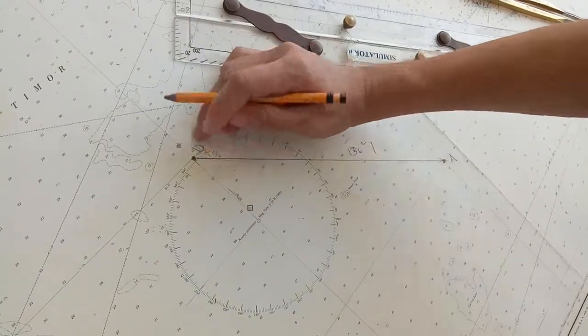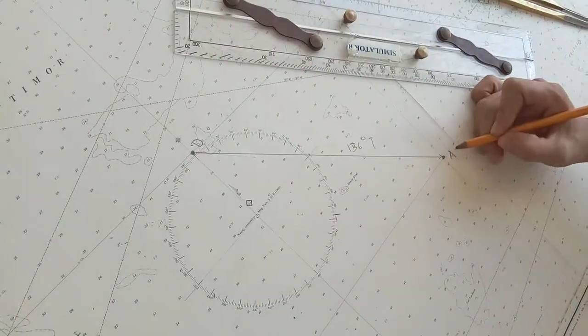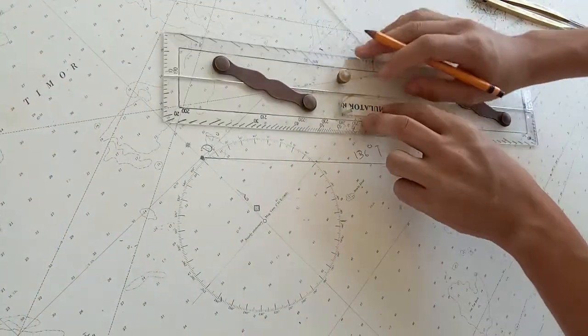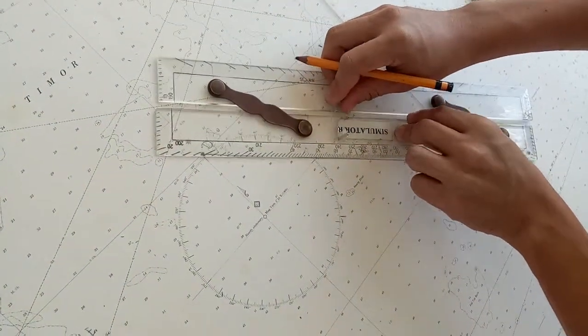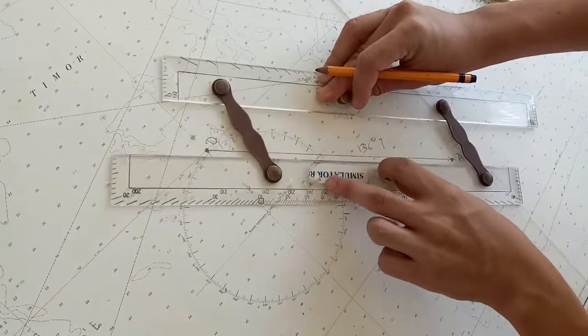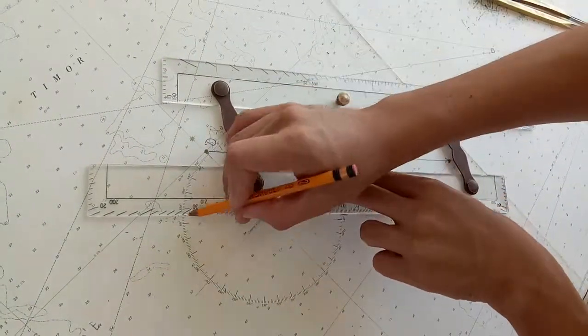So this is our departure. If this is our departure and this is our arrival, you just opposite it. Same thing. Just put and drag it to your compass rose and read it.